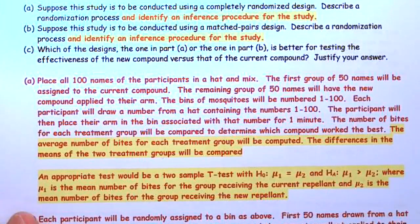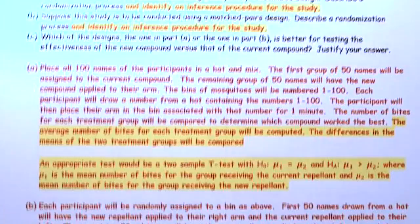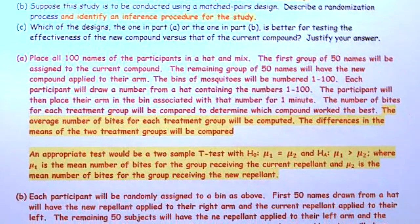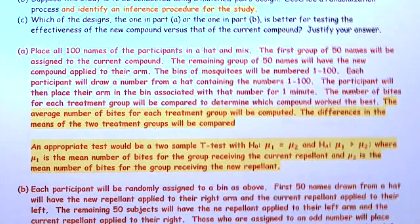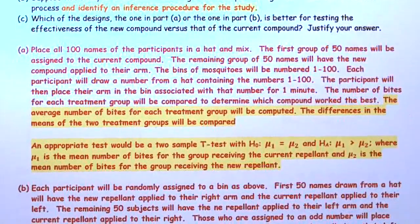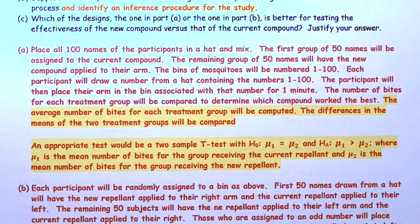Part B says: suppose this study is to be conducted using a matched pair design — describe the randomization process. In a matched pair design, you get tested twice. So in this case, each participant is going to get the new compound and the old mosquito repellent.